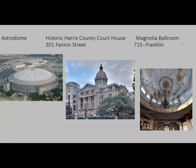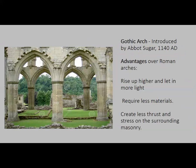The Magnolia Ballroom on Franklin has a dome, but I think it's closed and from the outside you can't really see it because it's a kind of flat dome. Moving on to the gothic arch — we did talk about it before when we were discussing light and color. The gothic arch was introduced by Abbot Suger in 1140.